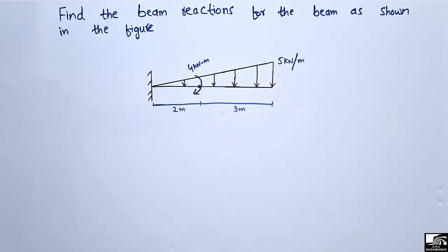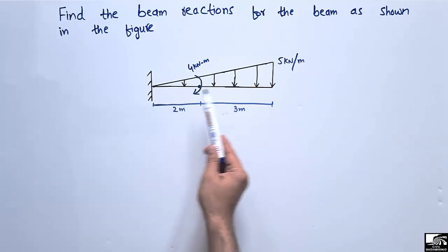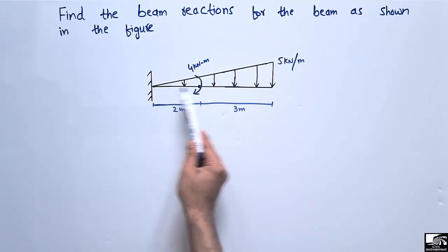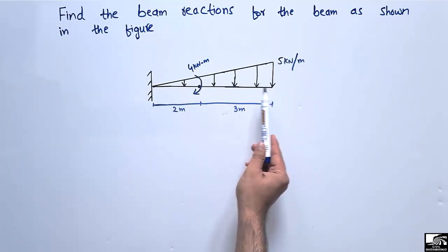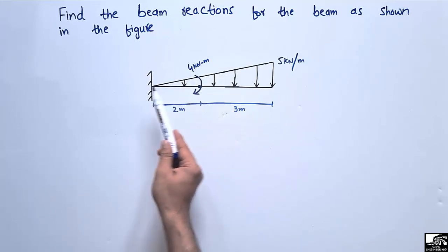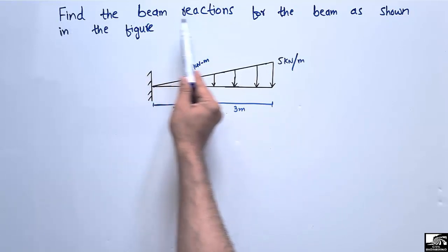Welcome back to 7 Engineering YouTube channel. In today's lecture we are going to find out the support reactions for a cantilever beam with a uniformly varying load or triangular load acting throughout the length of the beam, and also there is a moment of 14 Newton meter acting at a distance of 2 meters from the fixed support. The problem states: find the beam reactions for the beam shown in the figure.